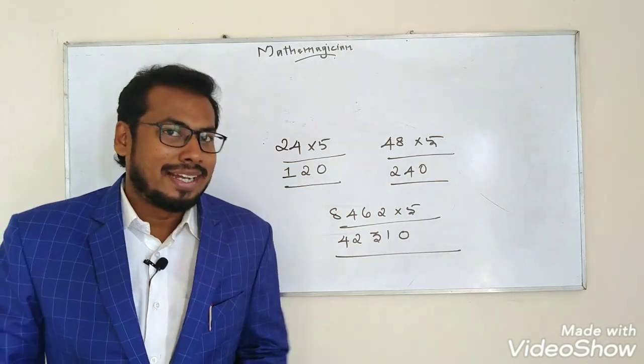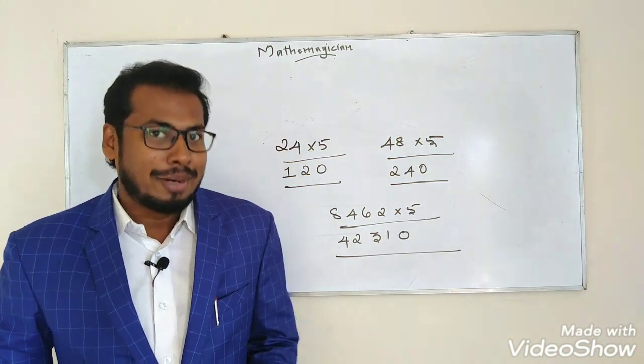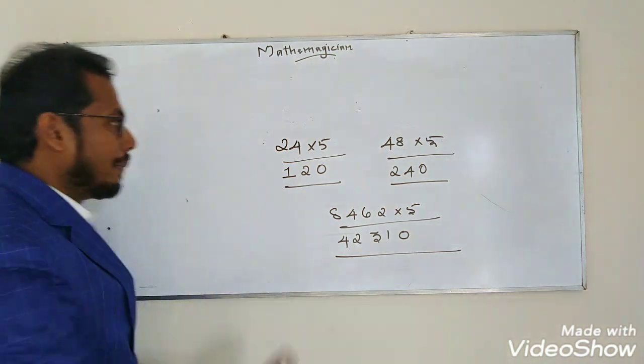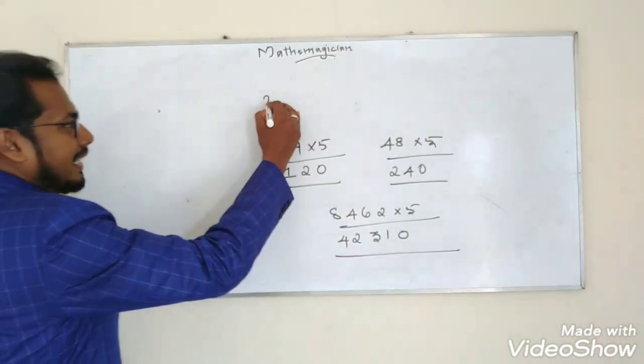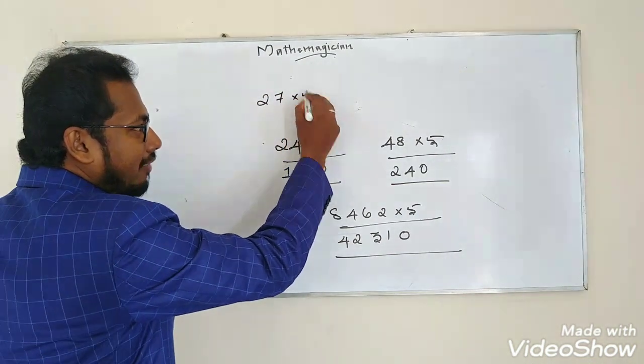Even numbers are straightforward - just take half directly. For odd numbers, for example 57 into 5, we handle it differently.